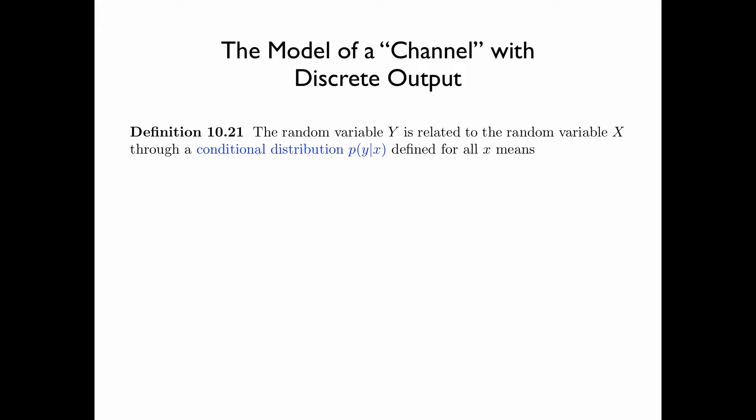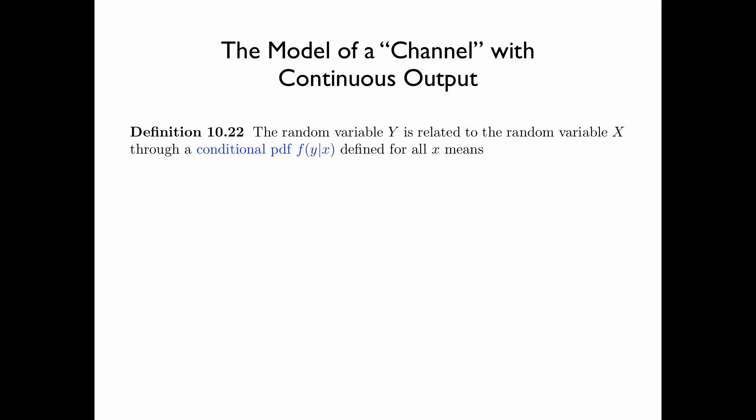We now introduce the model of a channel with discrete output. We say that the random variable y is related to the random variable x through a conditional distribution p(y|x), which is defined for all x, if y is obtained by passing x through the channel p(y|x). Here the distribution of x is general but the distribution of y is discrete. Likewise, we introduce the model of a channel with continuous output, where y is related to x through a conditional PDF f(y|x) defined for all x, and the distribution of y is continuous.